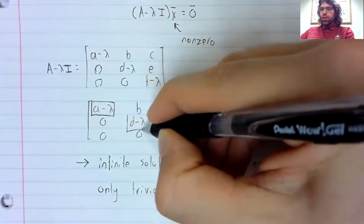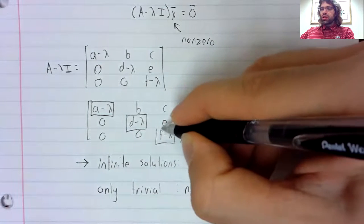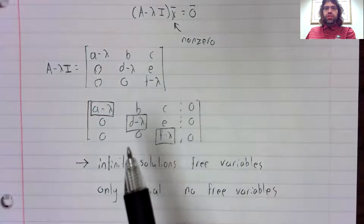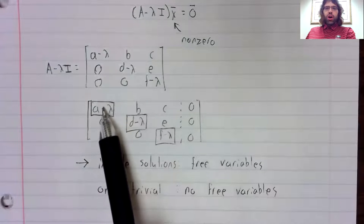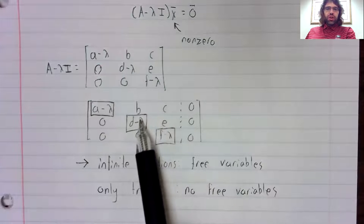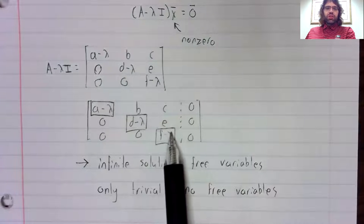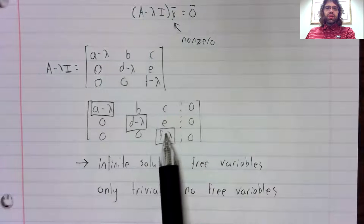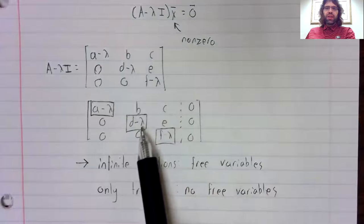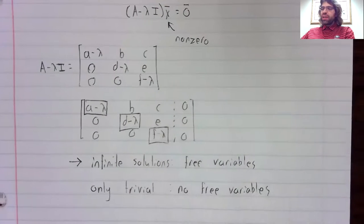How could a column not be a pivot column? Well, in ordinary situations, if this is non-zero, this is a pivot position. If this is non-zero, this is a pivot position. If this is non-zero, this is a pivot position. And all of the columns have pivot positions, and all of the variables are basic.